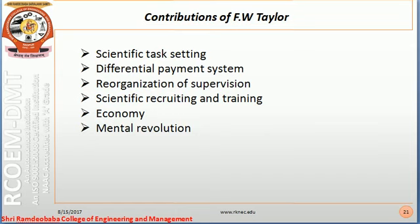According to Taylor, tasks should be scientifically set — every person should be given a task that is scientifically determined. The payment system should be differential — not the same for all. Payment should be higher for more efficient and faster workers compared to normal or slow, less efficient workers. Taylor also said that supervision should be reorganized: the work of planning and the work of doing should be separated.